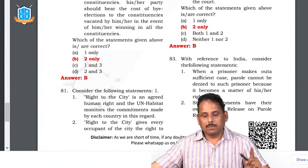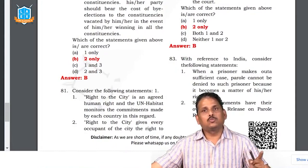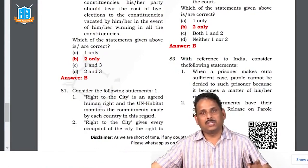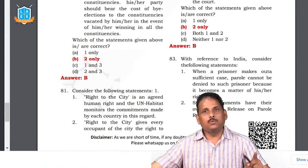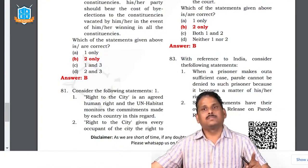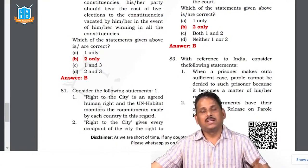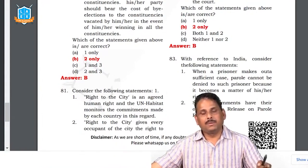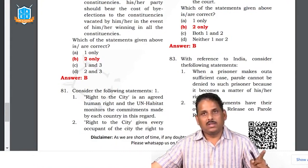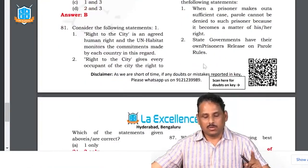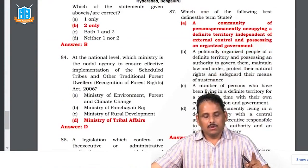Question 82: parole rights — parole means your chance to go out, meet friends, and come back to jail. The government must have a guarantee that you will come back to prison. Parole is not granted just because you have a reason to go — the government must also have reason to believe you will return. Prison rules are made by states and vary from state to state. Parole is not a right; it is the discretion of the government. The answer is two only.